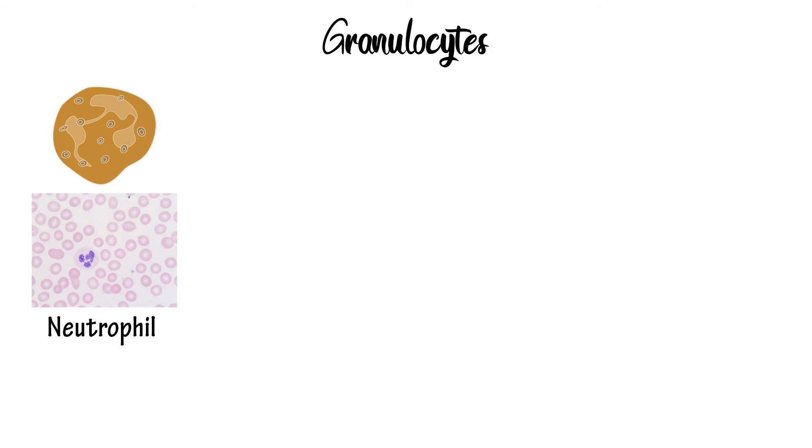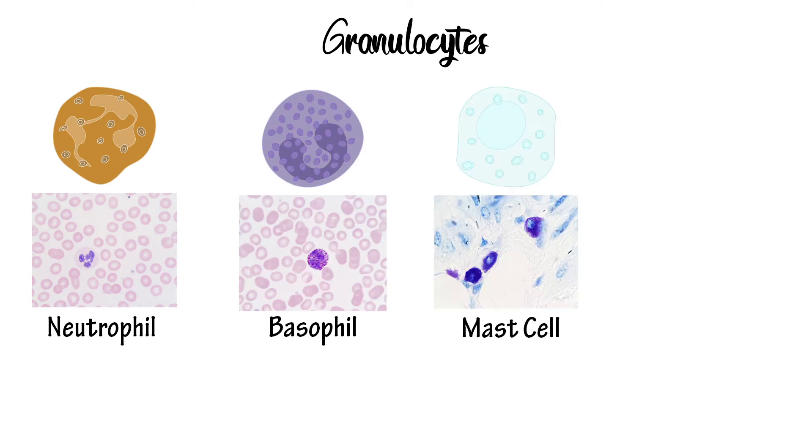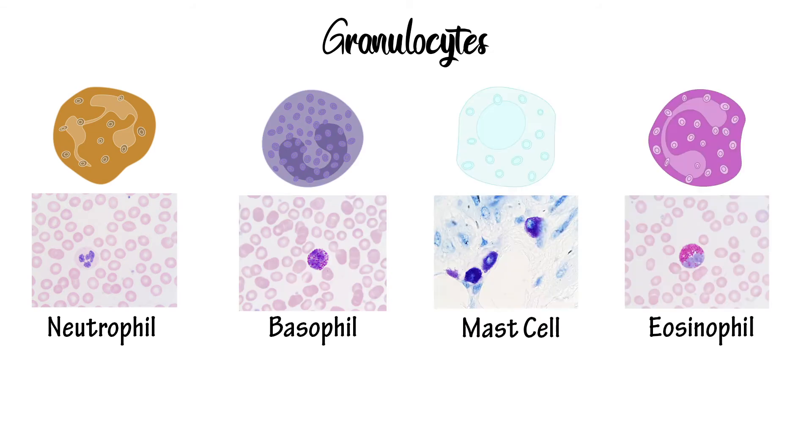After the initial recognition by the tissue resident cells, we have the granulocytes: neutrophils, basophils, mast cells, and eosinophils, named due to their granulated appearance under the microscope.